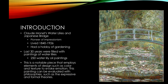To introduce the painting, Claude Monet's Water Lilies and Japanese Bridge was created in 1899. Claude Monet was a pioneer of the Impressionist movement. He lived from 1840 to 1926 and had a hobby of gardening, which will become relevant later in the presentation when we discuss the meaning of the painting itself.